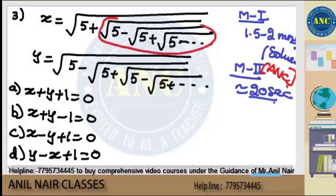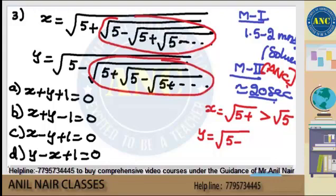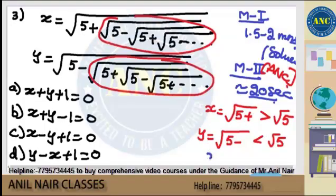If we ignore the inner terms, x is root of 5 plus root of 5 plus... which is nothing but greater than √5. So x is greater than √5. For y, root of 5 minus root of 5 minus... means it is less than √5. So x is greater than √5 and y is less than √5 — can I say x is greater than y? Yes, x is greater than y.